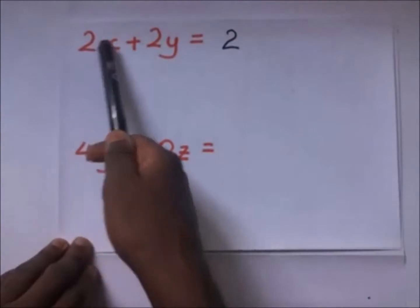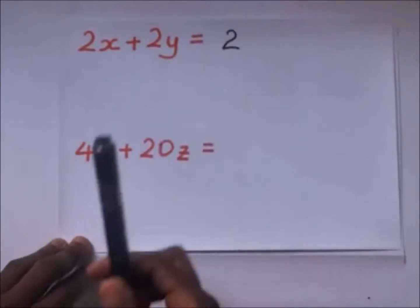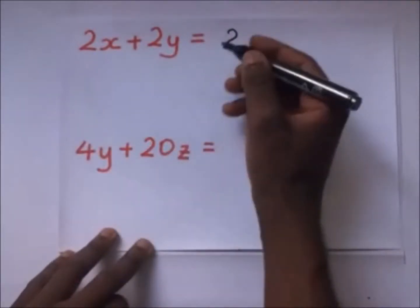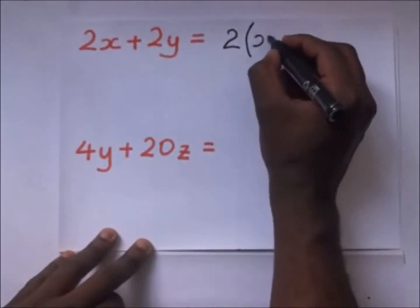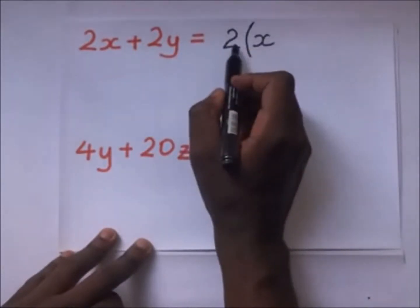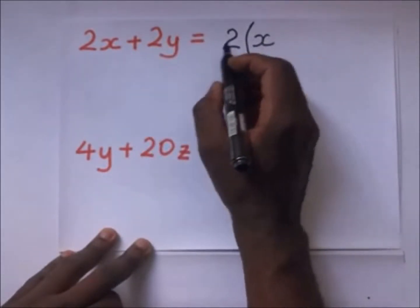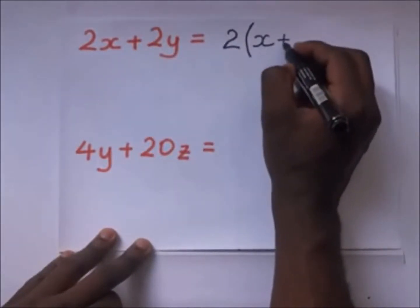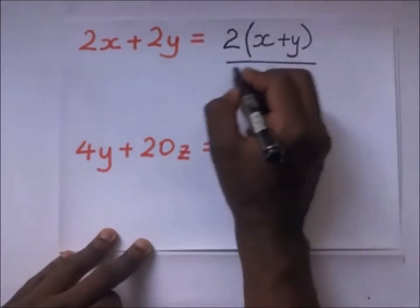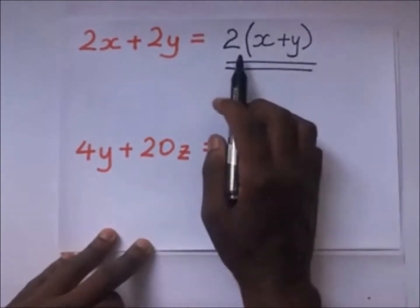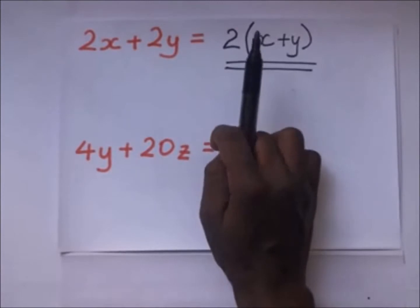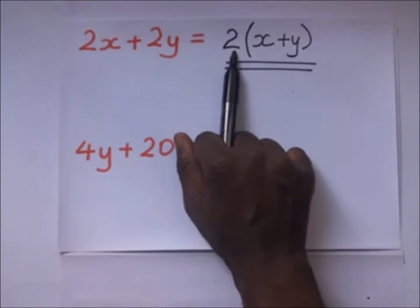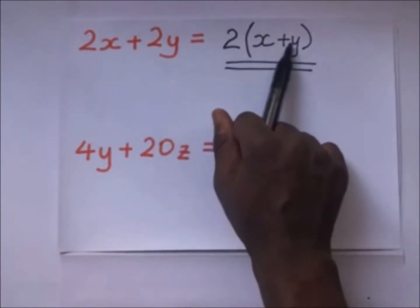When you put 2 outside the brackets, you divide each term by 2. 2x divided by 2 gives us x, then 2y divided by 2 gives y. So we get 2(x + y). This is what we call factorization — placing the common factor of two or more terms outside the brackets.